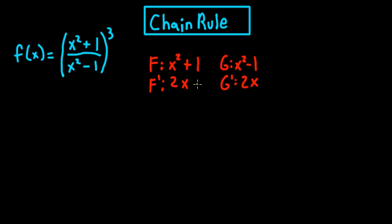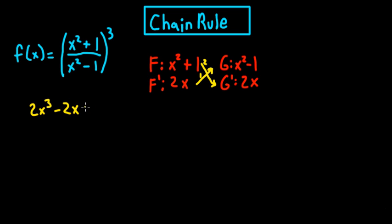So we cross multiply — that's going to be your first step. You're going to get 2x cubed minus 2x. Then the second step is you're going to multiply f times g prime. Now remember for the quotient rule, you're going to subtract this, so it's going to be 2x cubed plus 2x.